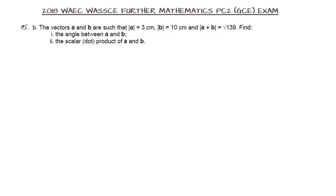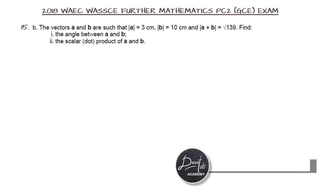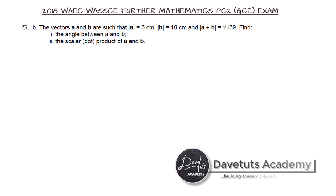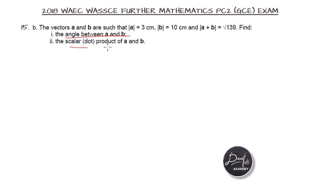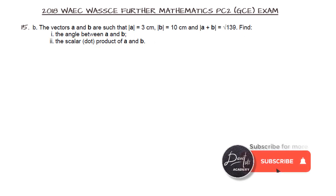In this question, we are given vectors a and b such that the magnitude of a is 3 cm, the magnitude of b is 10 cm, and the magnitude of vector a plus b is root 139. We have to find the angle between a and b, and the dot product of a and b.